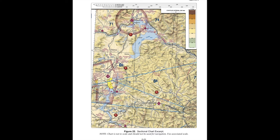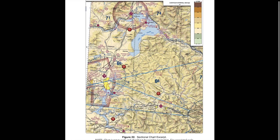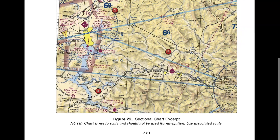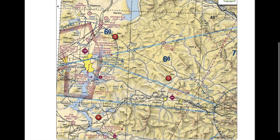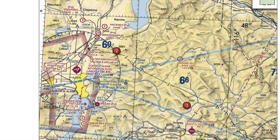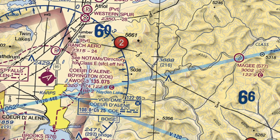Now that we have Figure 22 pulled up, make sure that's Figure 22 by looking at the bottom, because when you go and take your Part 107 exam in person, you will have a booklet that has all of these figures in it. Make sure you are checking and double-checking that it's the right figure. You don't want to spend all this time trying to find an airport and it's not on that figure because you're on the wrong one. So we're in Figure 22, and let's go towards Area 2 — we're looking for Coeur d'Alene.